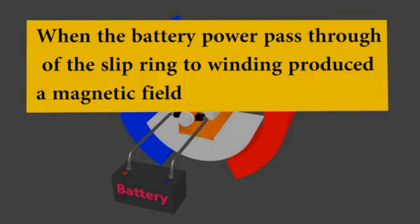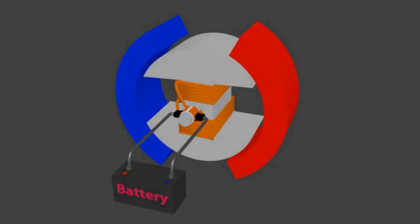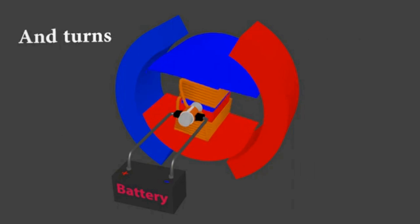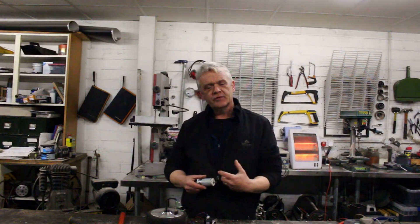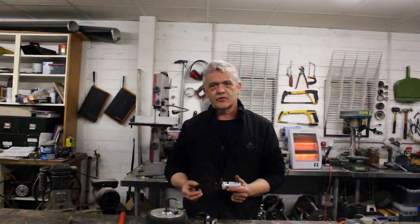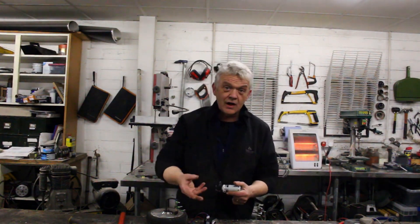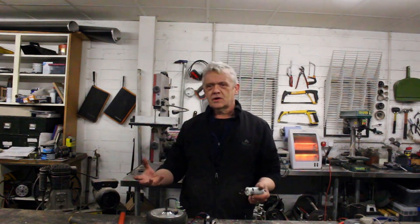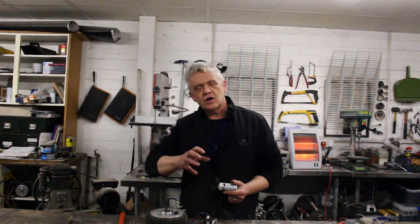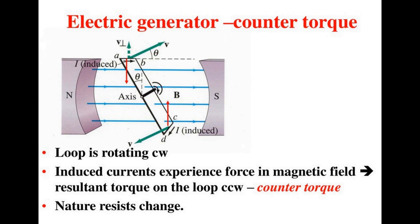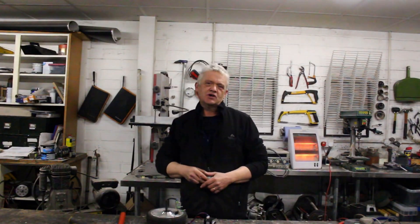In a motor you have a static magnetic field, supply a current to a coil, that creates a magnetic field around that coil and we get rotation. In a generator we rotate the coil and create a current. Just like feeding a coil with current creates a magnetic field, generating a current in a coil also creates a magnetic field - and in a generator that magnetic field is counter to the direction of rotation. It's called the counter torque, so spinning it creates a counter torque in the field coils that resists us spinning it.